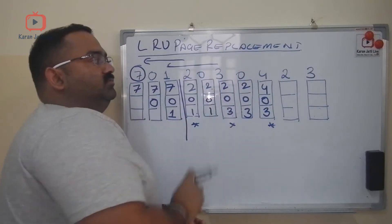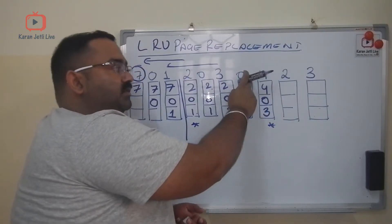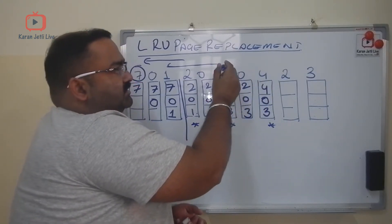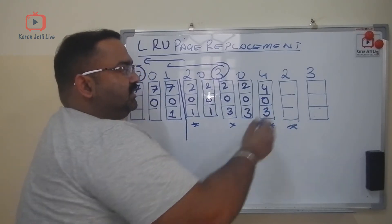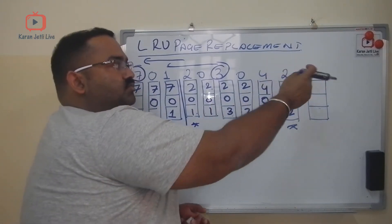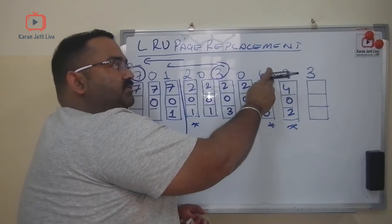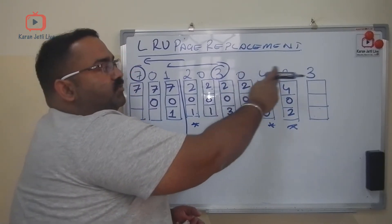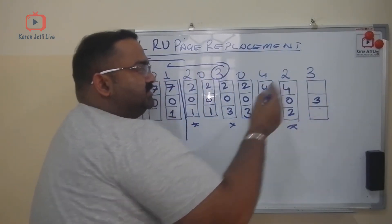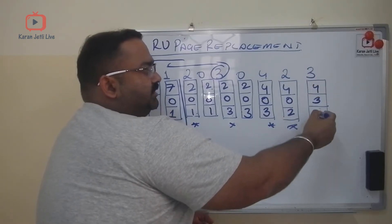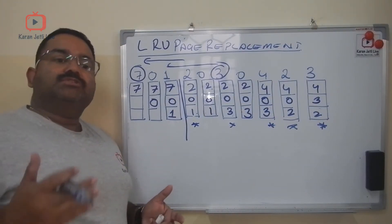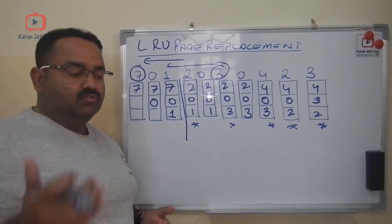Now I need page 2 again. Page 4 was just used and page 0 was used before it, so page 3 is the least recently used — I replace page 3 with page 2. Then I need page 3 again: page 2 was just used, page 4 before that, so page 0 is the LRU — I replace page 0 with page 3.